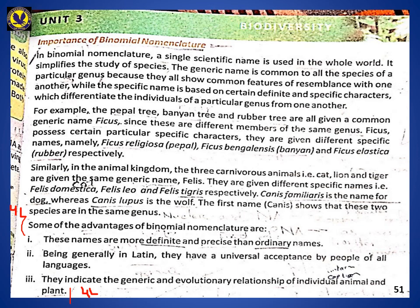The specific name is based on specific characters, and the important thing about this system is that it is used throughout the whole world, making it very easy to study. The generic name is common for all species that share features or resemblance — they are grouped together in a genus. The specific name is given based on a specific character that is unique to that organism. This way you can differentiate individual organisms within a particular genus from one another.